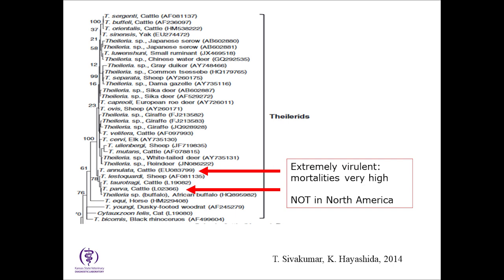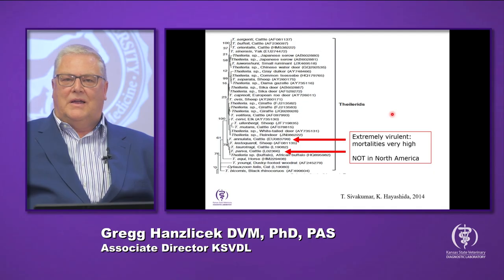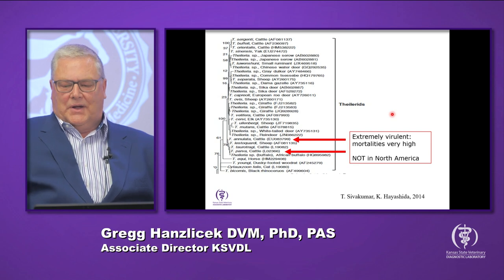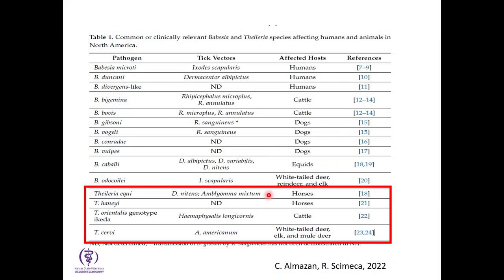We don't talk about Theileria very much in North America, but as you see on this slide, there are tons of different species. There are two in particular that infect domesticated bovines, and these two are particularly pathogenic — they cause very high mortalities. We do not have these two organisms in the United States or North America; they're specifically in Africa and Asia. The ones we do have include a couple found in horses, a cervid one seen in white-tailed deer and elk, and the one we're interested in today: Theileria orientalis.